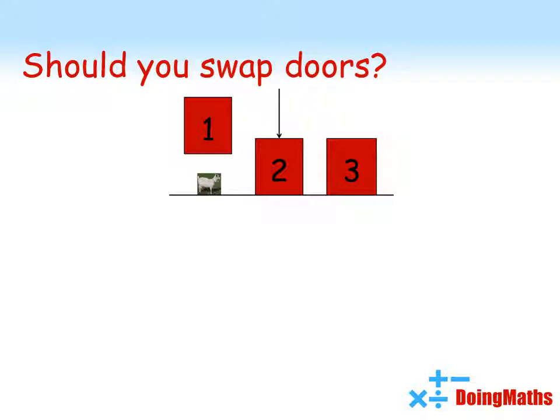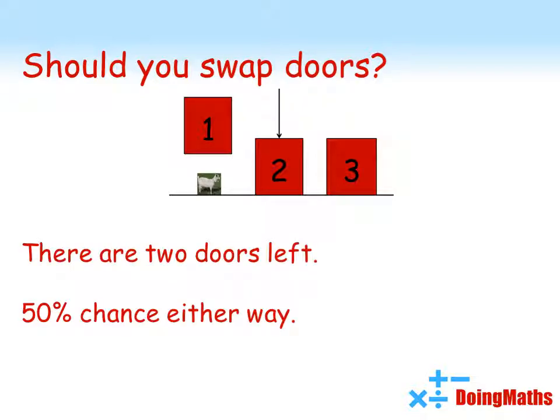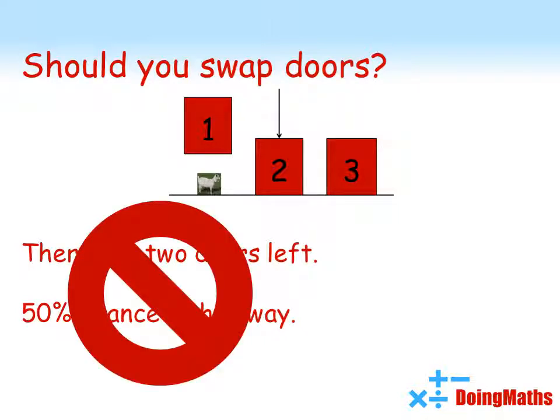Intuition seems to suggest that it doesn't matter. After all, there are two doors left, one has a car behind it, the other has a goat, so surely the odds are 50-50. However, this isn't true.